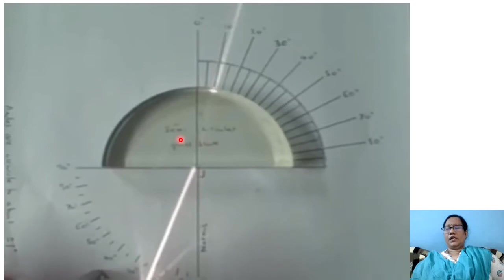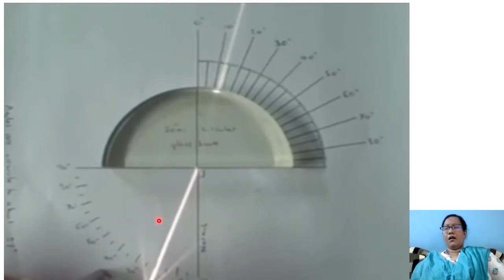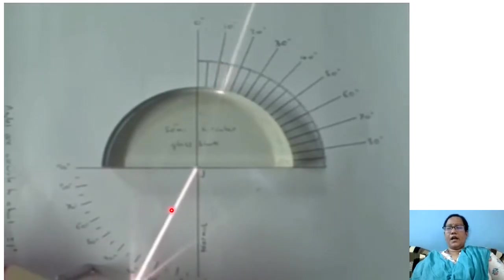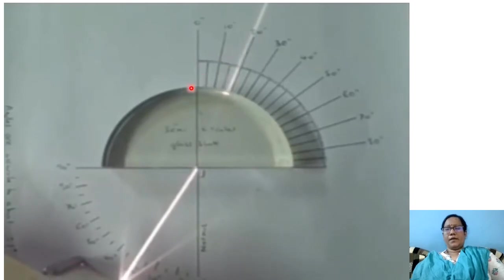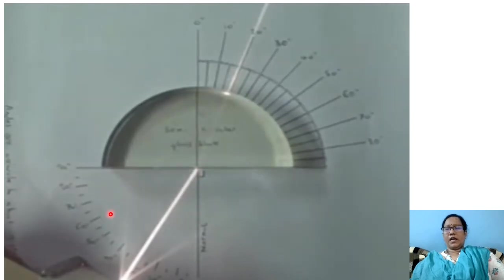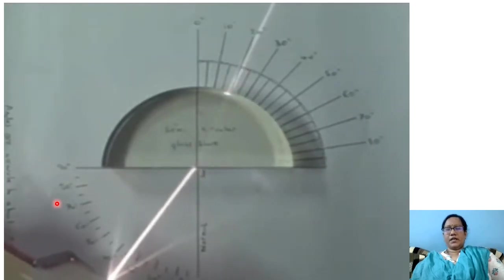Now send the laser light at an angle that makes 5 degrees, then 15 degrees with NN, and see that it must pass through point O. Measure the corresponding angle of refraction. Repeat the experiment with angles of incidence of 10, 20, 30, 40, 50, and 60 degrees, and note the corresponding angle of refraction.